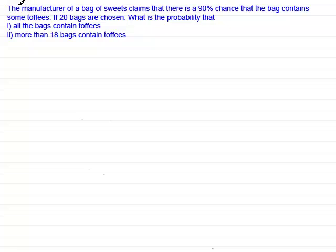Now for the first question we've got a manufacturer of a bag of sweets claims that there is a 90% chance that the bag contains some toffees. If 20 bags are chosen, what is the probability that i) all the bags contain toffees and ii) more than 18 bags contain toffees.